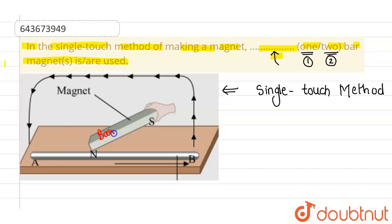So what we do in this method is we simply give strokes on this particular steel or iron rod. So this is steel or iron rod, and this we have to convert into a magnet. So basically we give strokes along the length of this particular rod by using a single bar magnet.